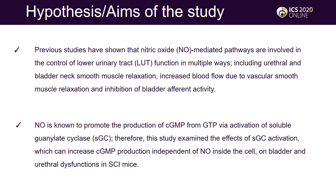Previous studies have shown that nitric oxide-mediated pathways are involved in the control of lower urinary tract function in multiple ways. NO is known to promote the production of cyclic GMP from GTP by activation of soluble guanylate cyclase. Therefore, this study examined the effects of sGC activation, which can increase cyclic GMP production independent of NO inside the cell, on bladder and urethral dysfunctions in SCI mice.